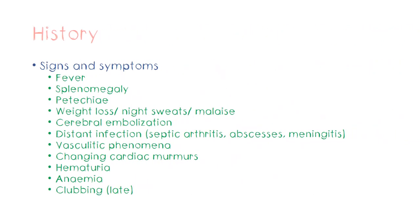Infective means due to infection, endo means within, cardiac means relating to the heart, and itis means inflammation. To recognize the disease we should know the signs and symptoms. One of the commonest features is fever. Infective endocarditis is actually a cause for pyrexia of unknown origin — basically chronic fever that may not have an evident cause on preliminary investigation.